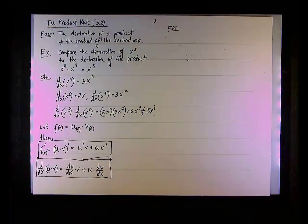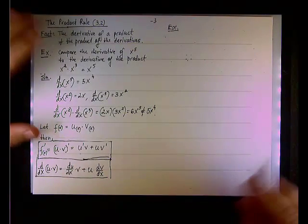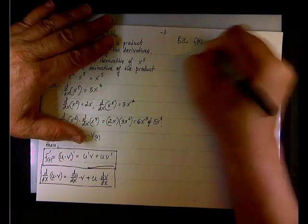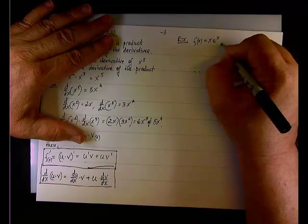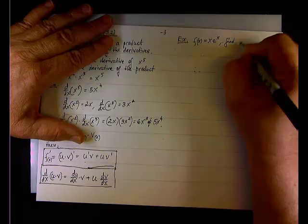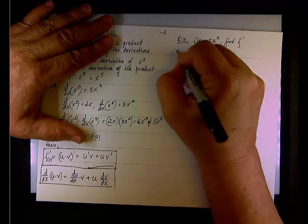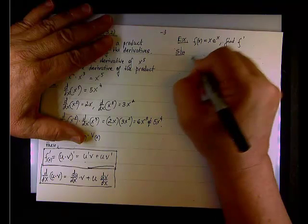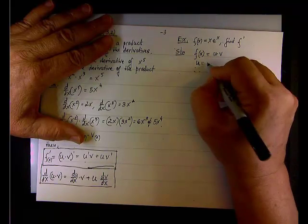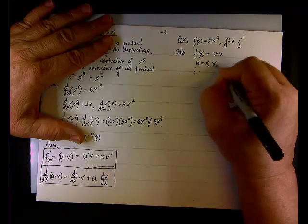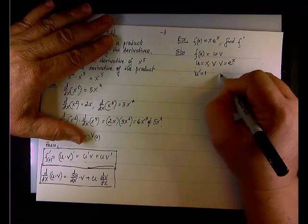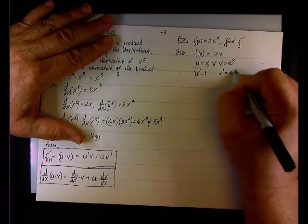And let's run through series of examples to demonstrate this particular problem. For the first example, let's find the derivative of a function f(x) equals x e to the x. Okay? So, in this solution, we're going to say that f(x) equals u times v, and of course, u equals x, v equals e to the x, u prime will be 1, and v prime will be, well, e to the x.